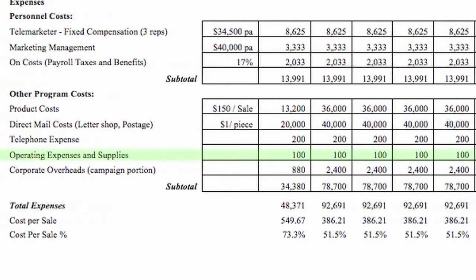Operating expenses and supplies identifies any costs associated with expenses or supplies you need to make the sale happen — this could be where you include all your fulfillment costs to get the product or service to the consumer. Corporate overheads: this is the campaign portion, and while your company may capture these costs in your overall marketing budget, if not, you'll need to figure out what proportion of overheads should be assigned to each campaign. You need to cover all costs and all revenue accurately so you have the best chance of success and of making money.